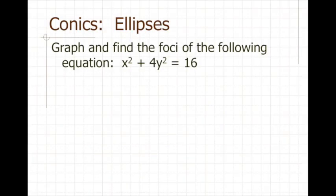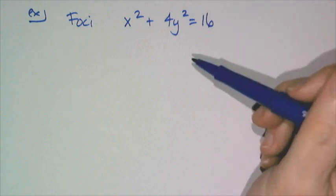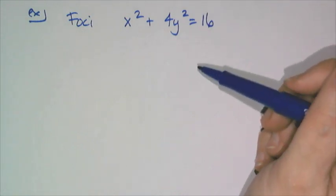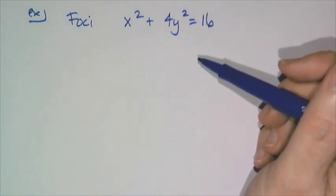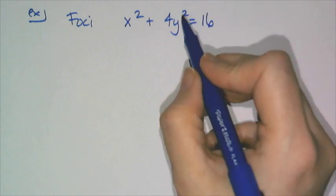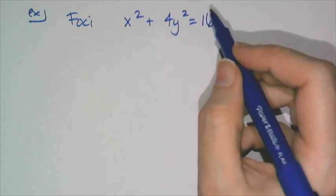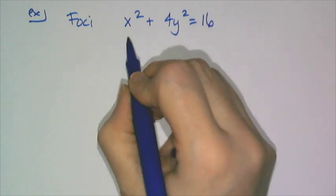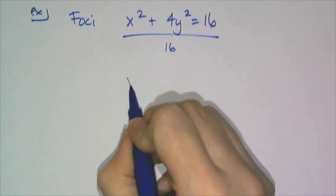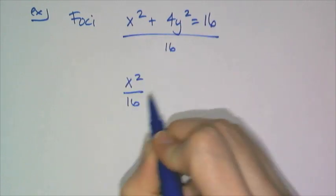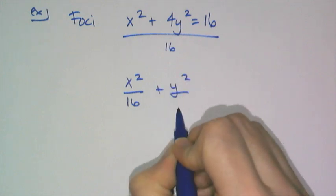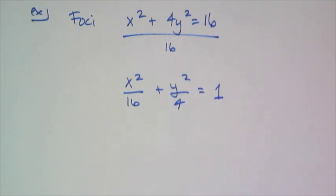Let's try this example: graph and find the foci of x squared plus 4y squared equals 16. It's easiest to find all the information if I have it in the equal-one format. So if I divide the whole thing by 16, I get x squared over 16 plus y squared over 4 equals 1.